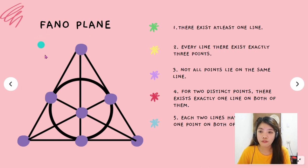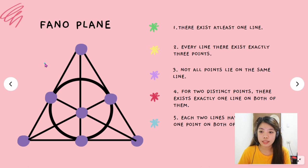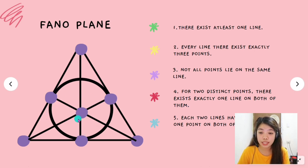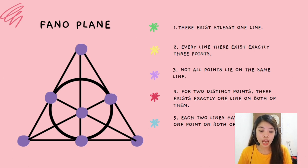And this is how the Fano Plane looks like. We have already established 2 facts: the Fano Plane has 7 points and 7 lines. By the way, all lines in the Fano Plane are straight lines. The circle in the middle just looks like a circle to us since we are looking at a representation in the Euclidean plane, but all lines in the Fano Plane are straight lines. And that is the axiom of the Fano Plane.